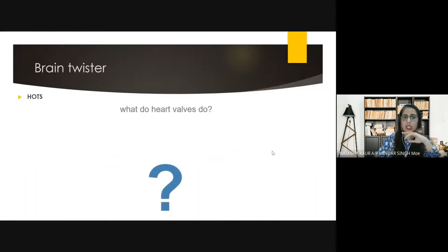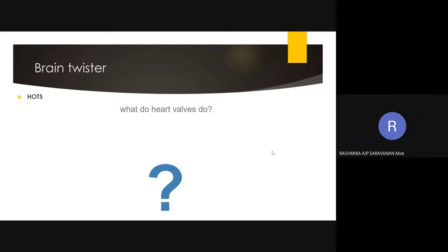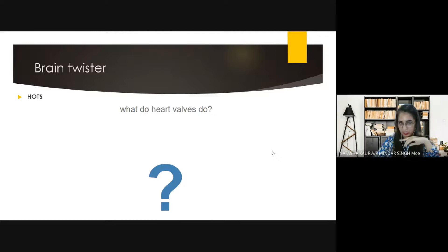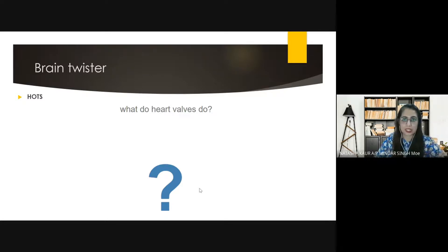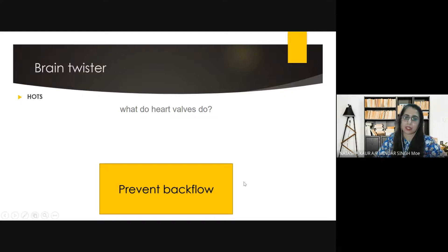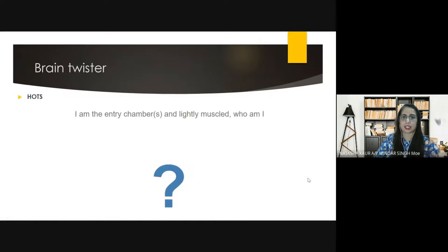Right atrium, left atrium, right ventricle, left ventricle. Very good. We have two atria and two ventricles. Now what do the heart valves do? They allow blood to flow in the heart and also prevent the blood from flowing back — it flows in one direction only. So both answers are correct: it prevents backflow and helps blood flow in one direction.